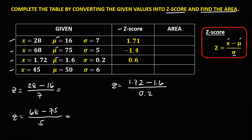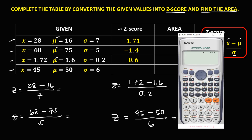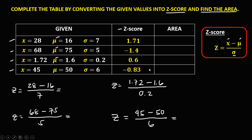For the last one, the X value is 45, minus the mean of 50, over the standard deviation of 6. So 45 minus 50 equals -5, then divide by 6 equals -0.83. So these are now the Z-scores of the given values.